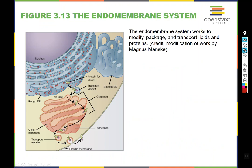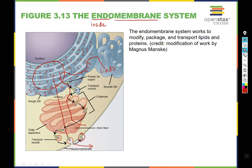One topic we need to address is the endomembrane system. Endo means inside and membrane means what it sounds like. The endomembrane system is the production line in a cell that makes things — it modifies, packages, and transports lipids and proteins. Proteins are born here in the nucleus where the instructions live, and they travel through the ER until they are either stuck in the membrane or end up outside or somewhere else in the cell. Lipids undergo the same process — made in the ER, traveling through this network to the Golgi where they are packaged, and then incorporated into the membrane.